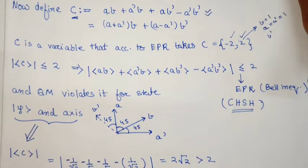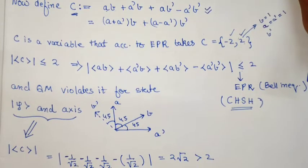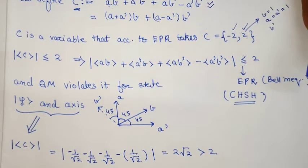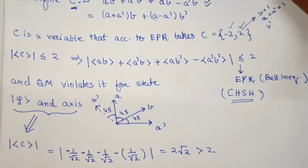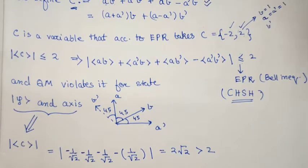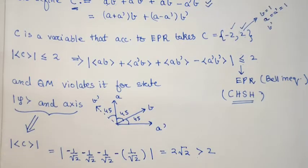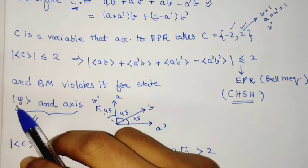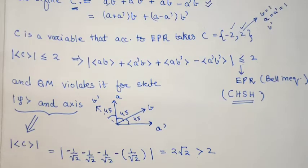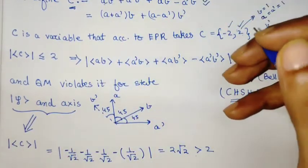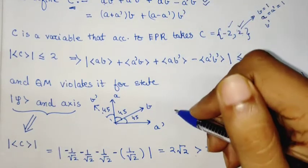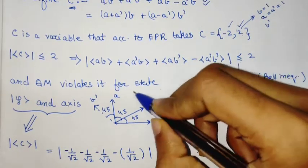These are the names of the people who derived this inequality. Now we look at the quantum mechanical violation, as we saw in Bell's case. Quantum mechanics easily violates this inequality. Suppose we take the singlet state |ψ⟩ and let a, a', b, b' be the values of spin components about the axes shown.